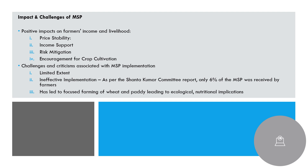There are many challenges with MSP. First, the extent is very limited — people are mostly focused on growing wheat and paddy because the government buys these two crops the most. According to the Shanta Kumar Commission report, only 6% of farmers who are entitled to MSP actually receive it, meaning 94% of farmers did not receive MSP at all. So even though the government is spending a lot, the wide impact is not being created. You can remember these statistics for the Mains perspective.